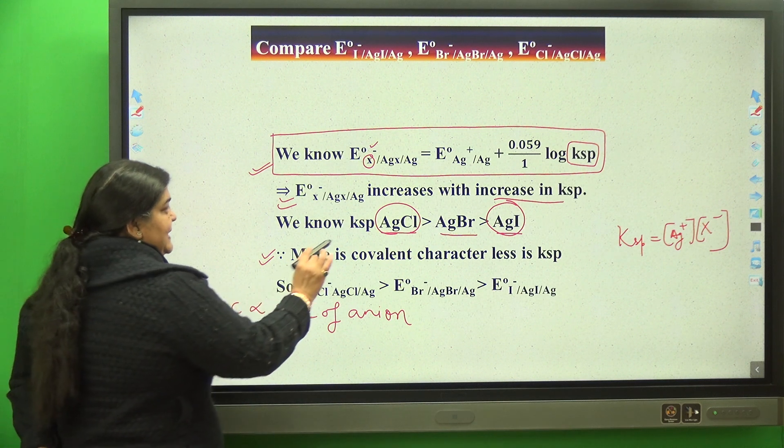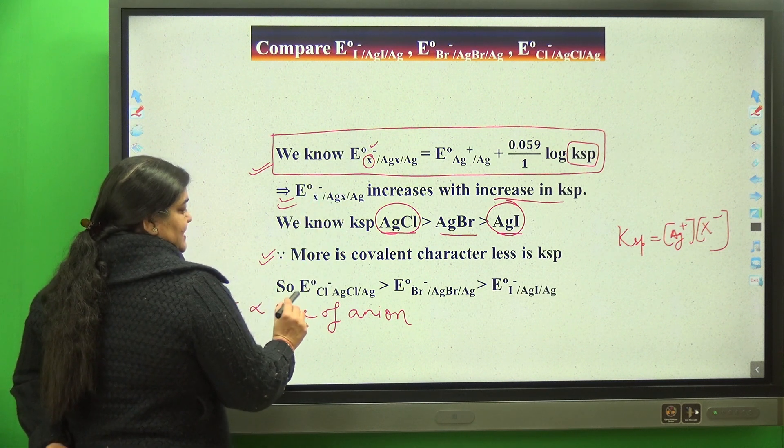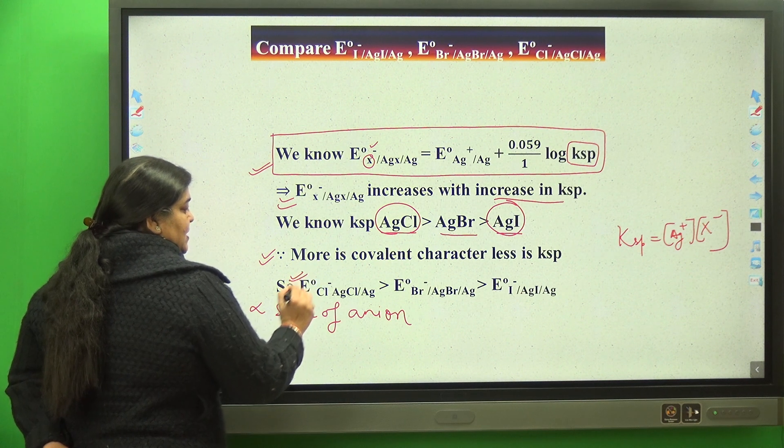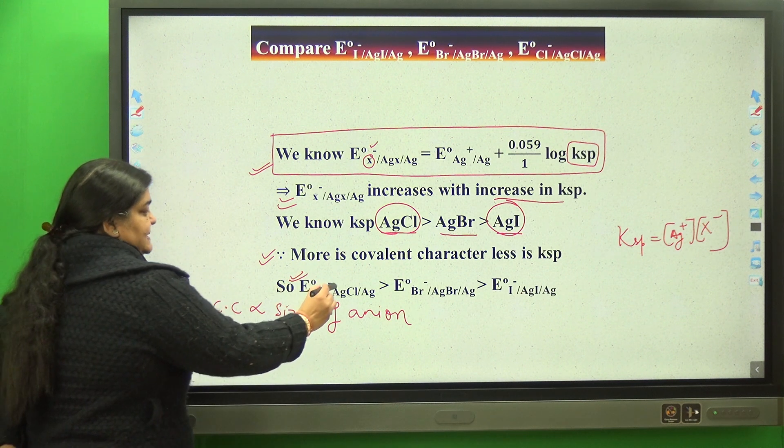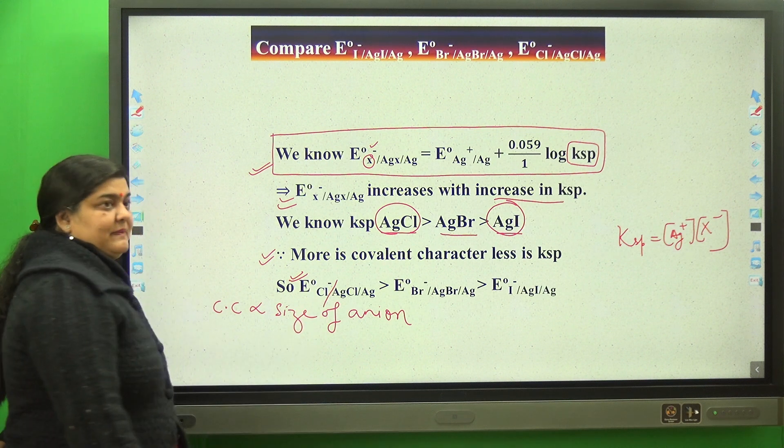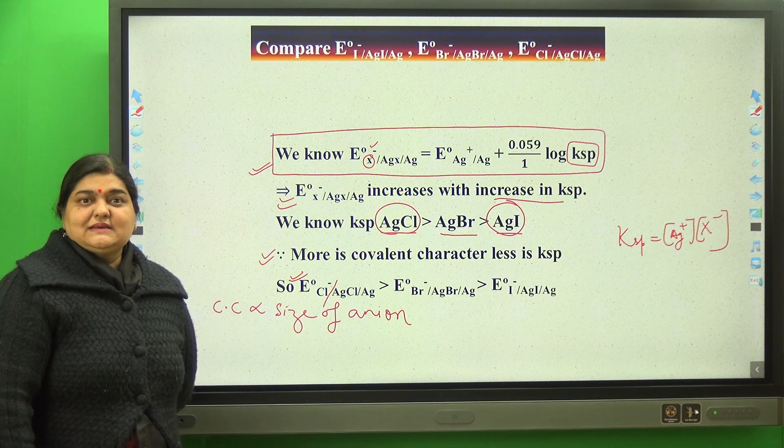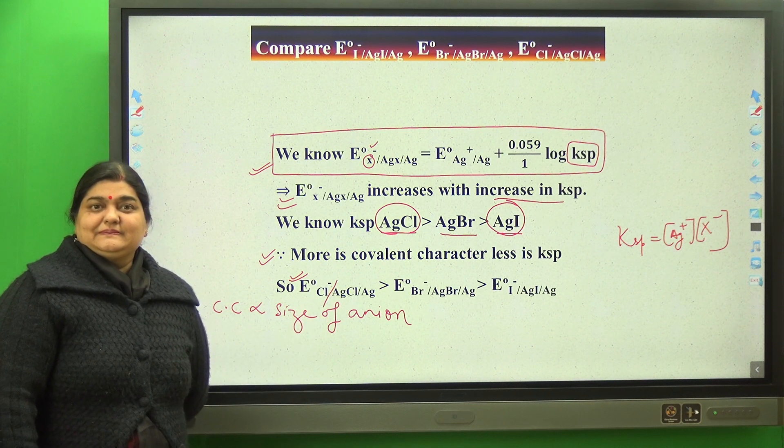Less is KSP, less is E°. So that is why E° of silver coated with silver chloride dipped in Cl⁻ is highest.